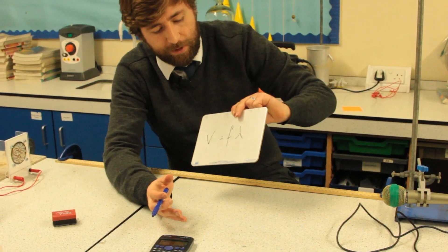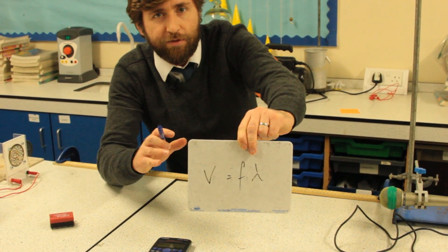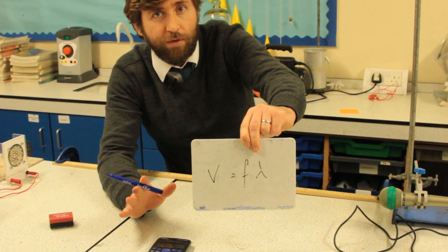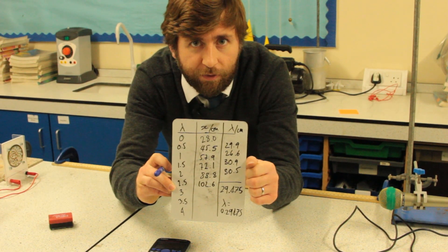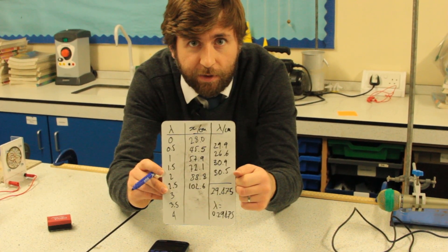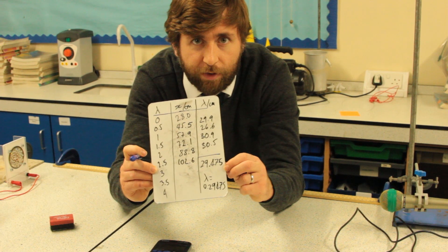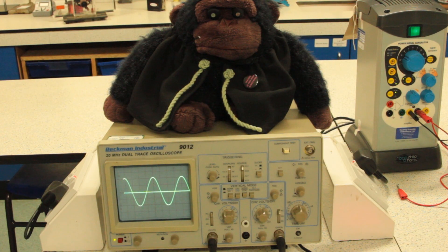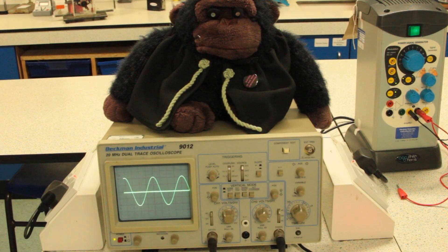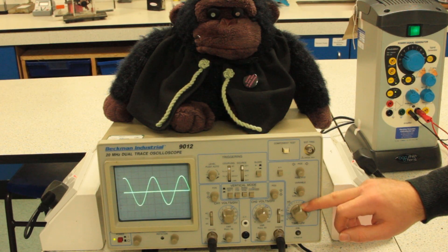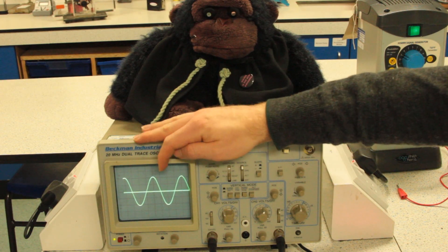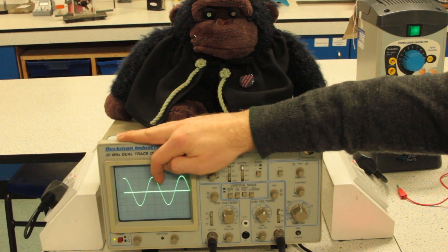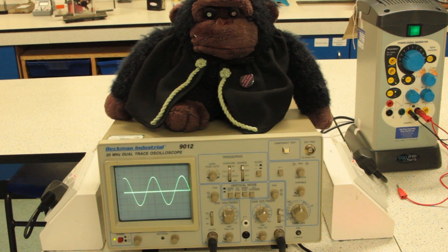Last thing to measure — don't forget we need our frequency for the wave speed equation. We can measure this with the sound off because we're just reading the frequency of the AC trace from the signal generator. Looking at the oscilloscope, the time base is 0.2 milliseconds per division, which is 2 × 10⁻⁴ s. From the first peak I count 1, 2, 3, 4 boxes for one full cycle, so the period is 8 × 10⁻⁴ s, giving a frequency of 1/(8 × 10⁻⁴) = 1250 Hz.